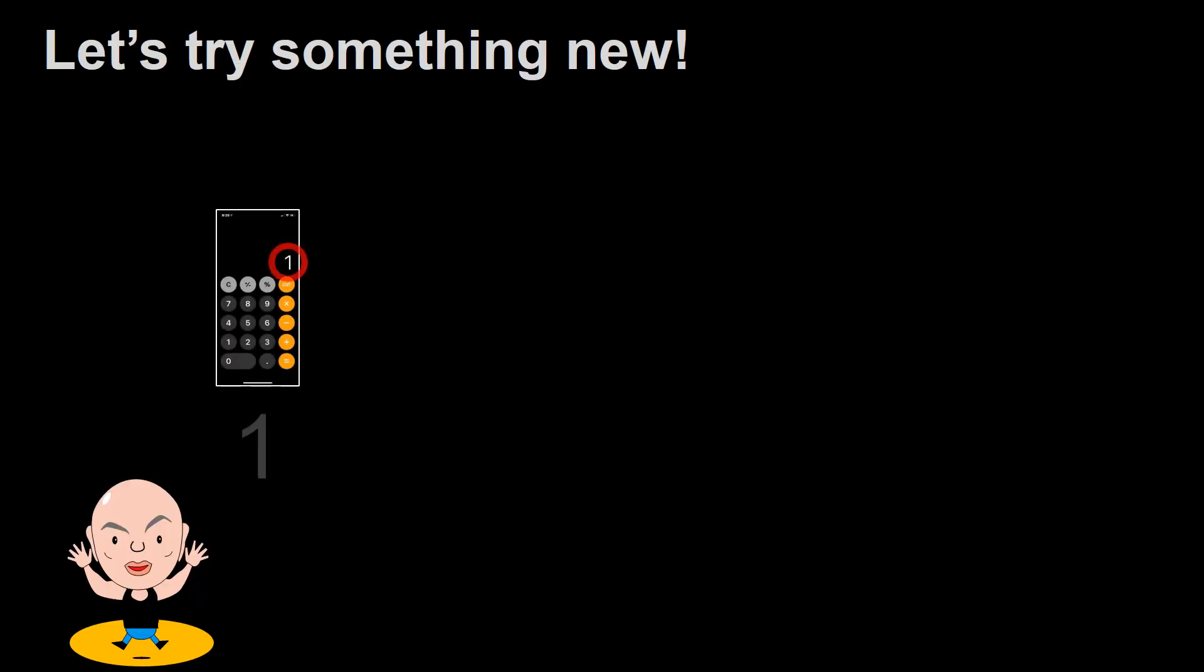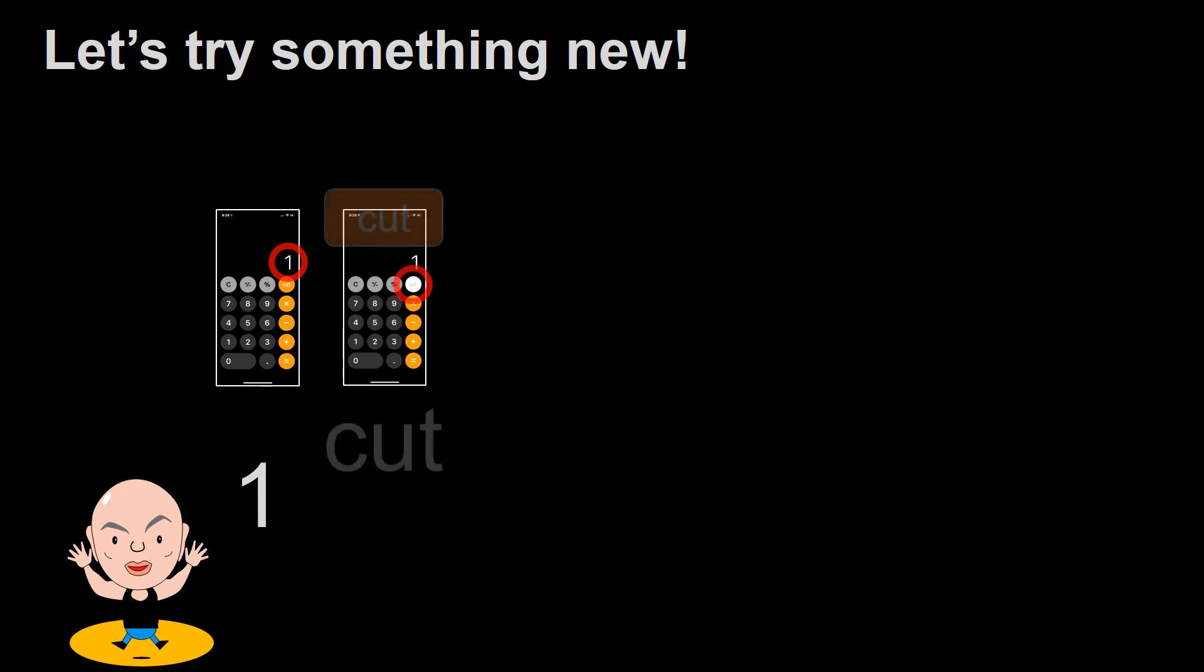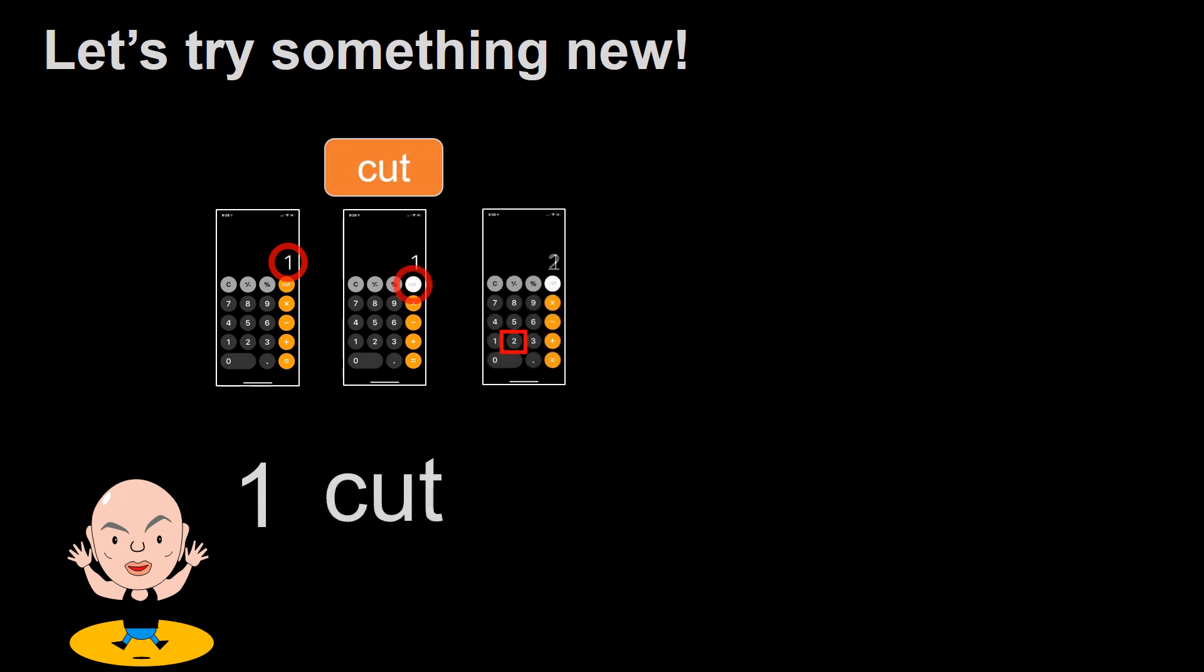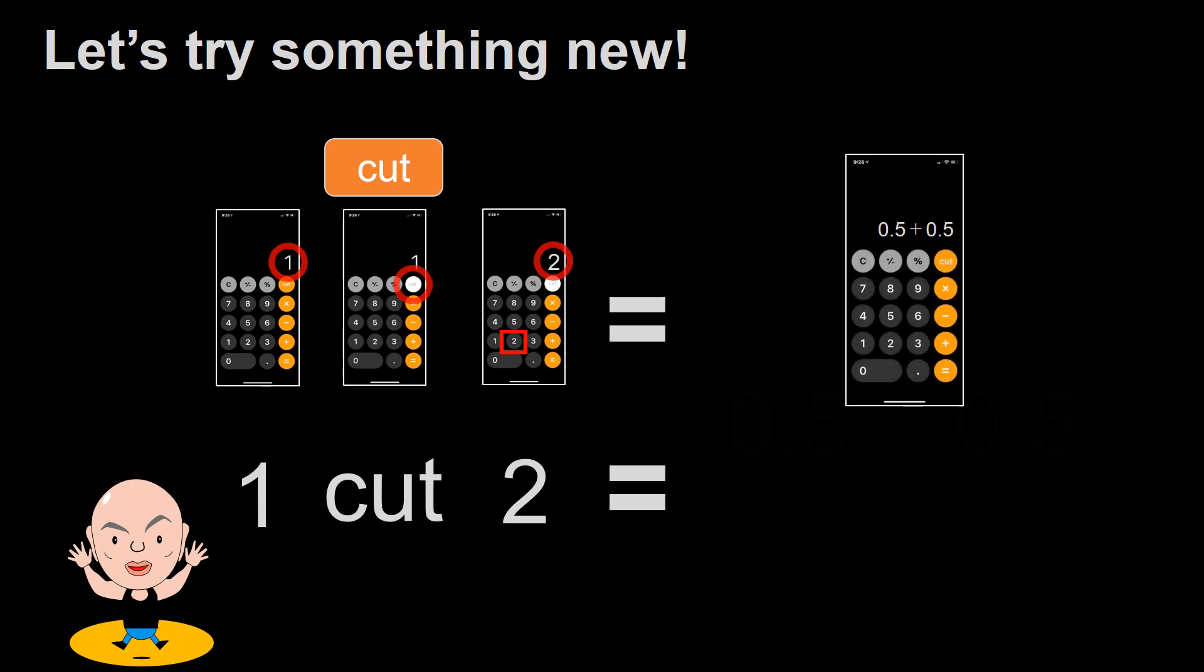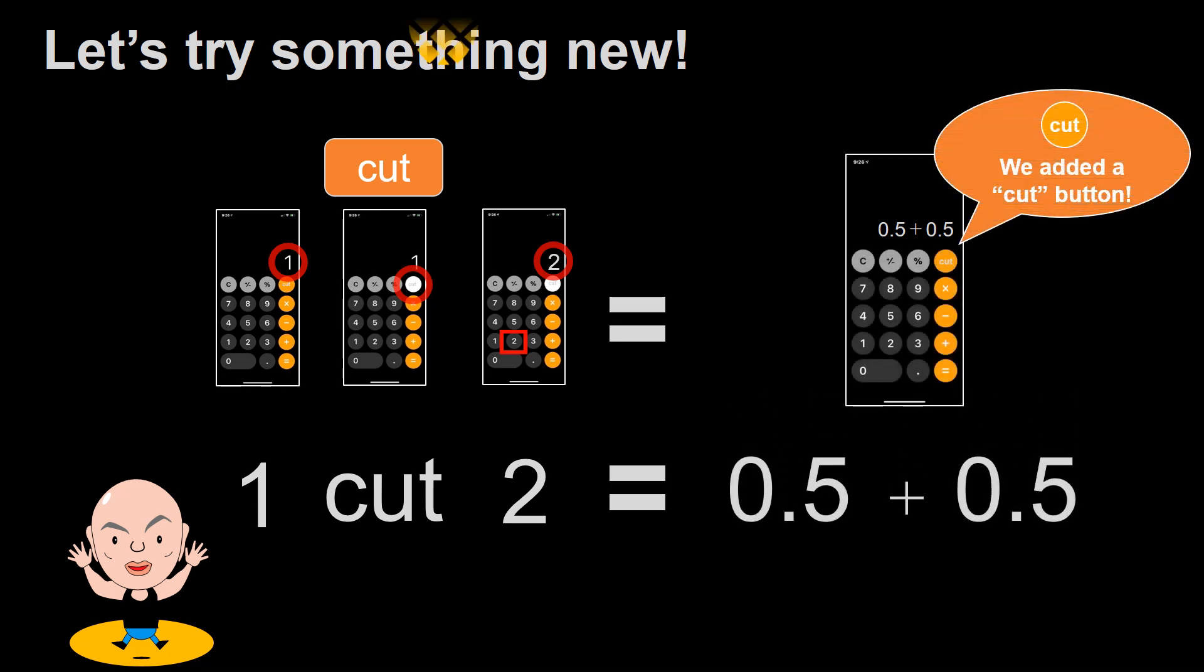Now, let's try a new pineapple phone. First, type in 1 cut 2. Yes, we've created a new button on our calculator that isn't a divisor. The answer is 0.5, 0.5. What can this do? Will it bring back the one that disappeared?